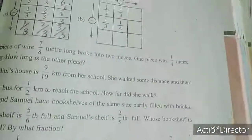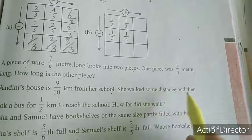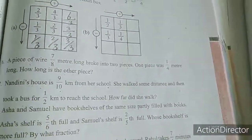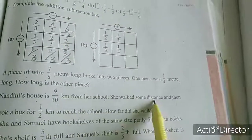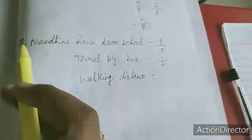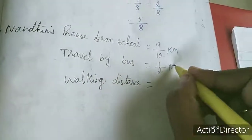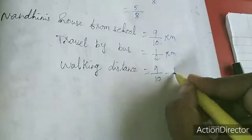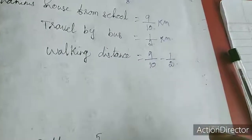Now we will move to the 7th. Nandani's house is 9 by 10 kilometer from her school. She walked at some distance and then took a bus for 1 by 2 kilometer to reach the school. How far did she walk? Nandani's house from school is 9 by 10 kilometer. Traveled by bus is 1 by 2 kilometer. Walking distance means 9 by 10 minus 1 by 2. This is the homework for you. After this you have to simplify and find out how much distance she walked.